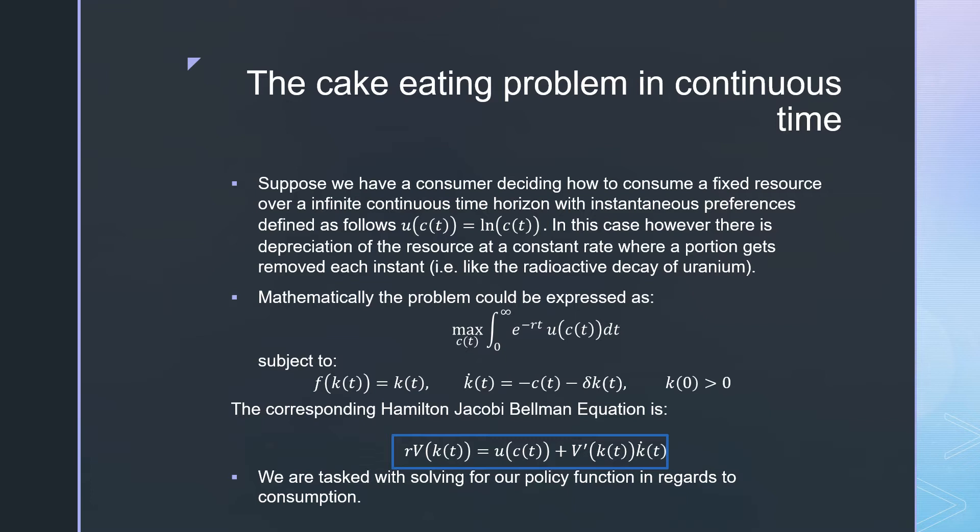Mathematically speaking, we can think of this as maximizing over the continuous discounted time horizon from zero to infinity of our utilities, subject to this constraint here. Our production here is just going to be defined as an initial cake size, with the cake size at time zero being greater than zero.